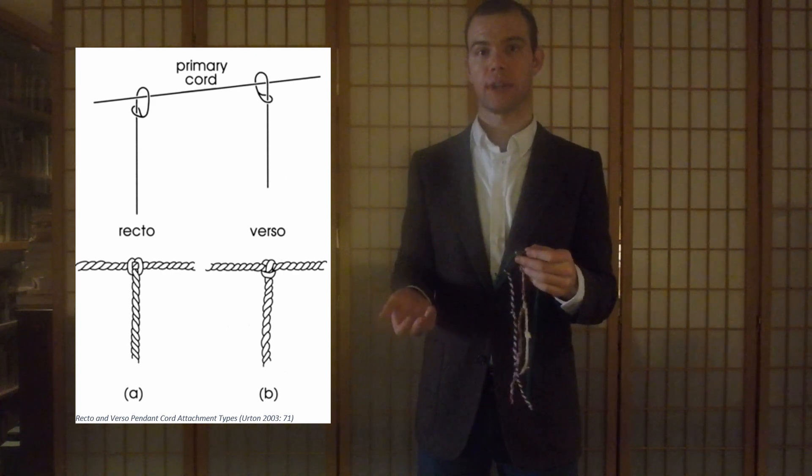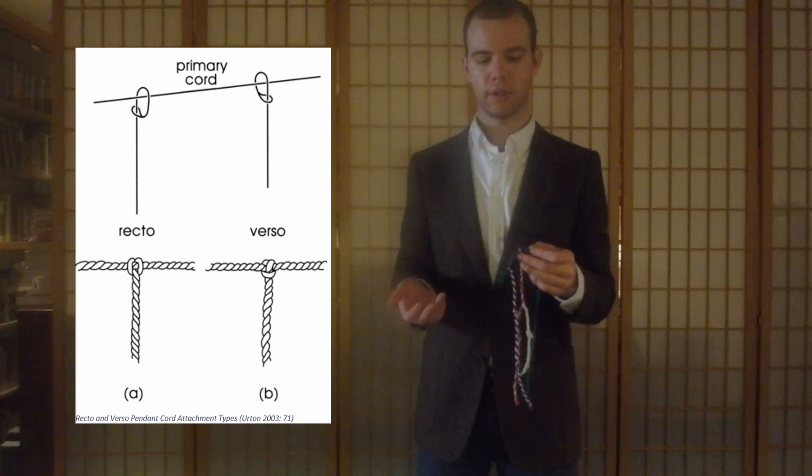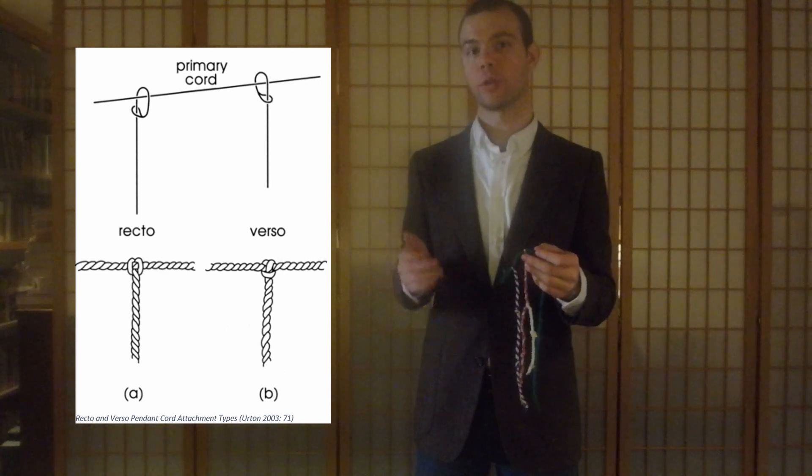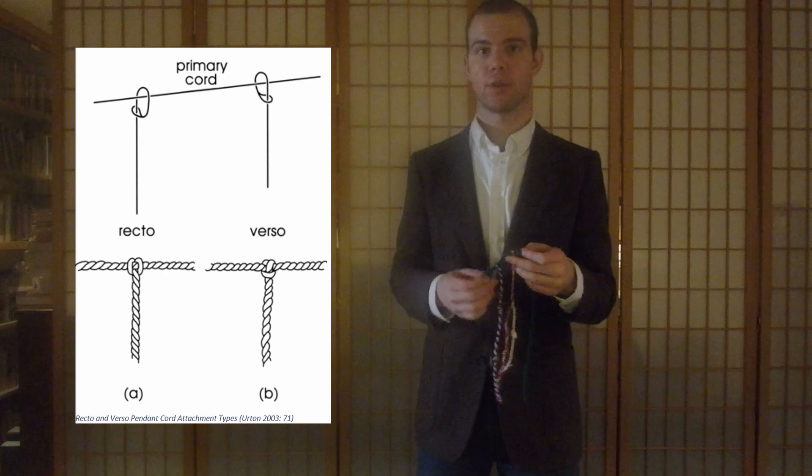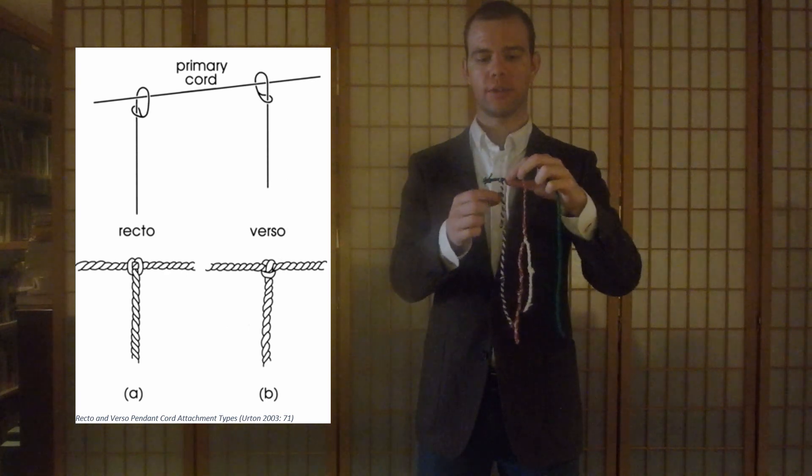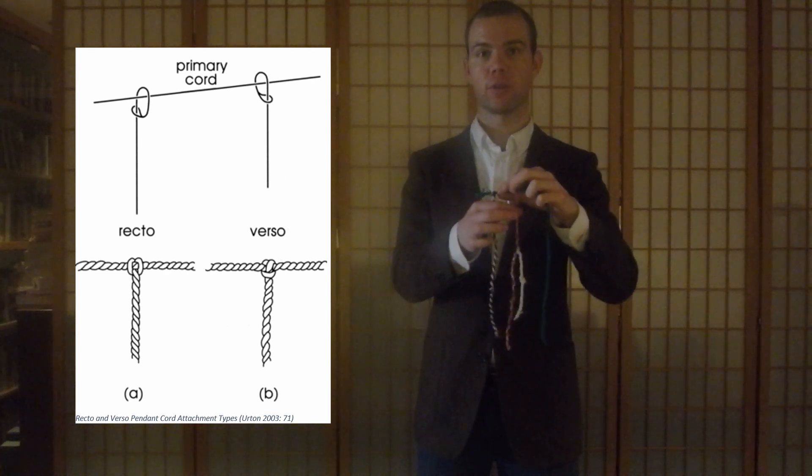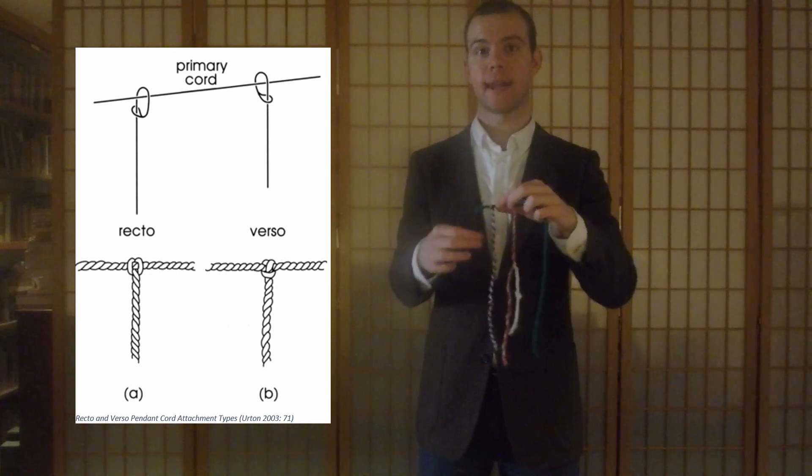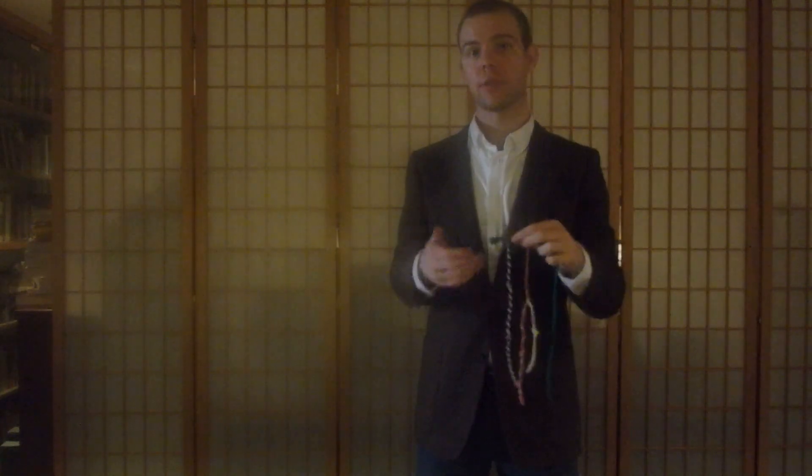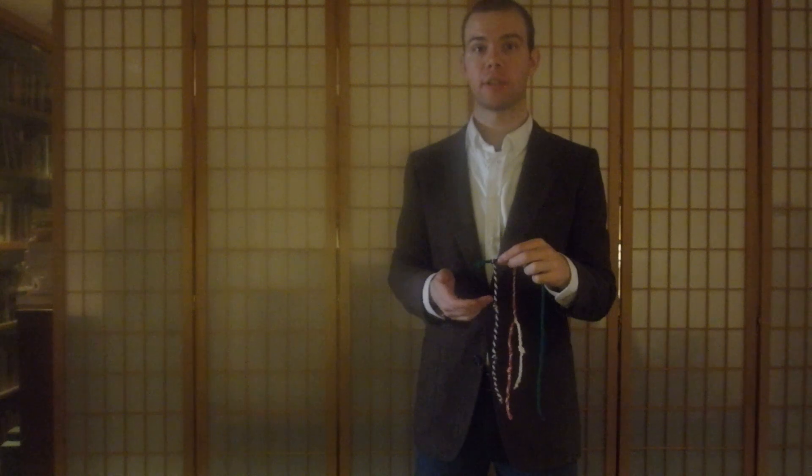In colonial times we know that people were using attachment type to signify the difference between social groups. If one person was from one social group and another was from another social group, they would use distinct attachment types to signify that. Let's take a look at what these attachment types are and how we tie them.